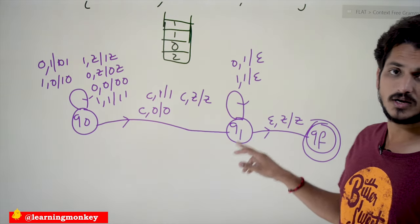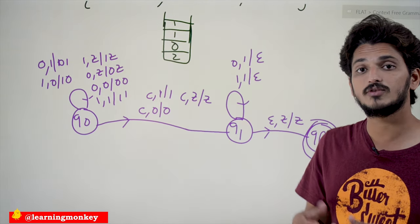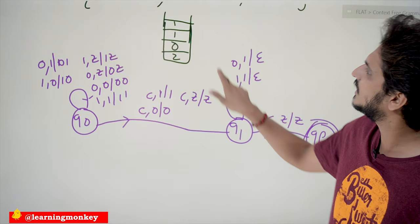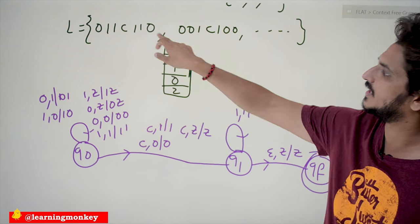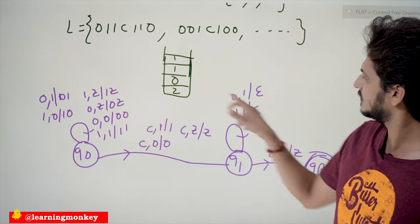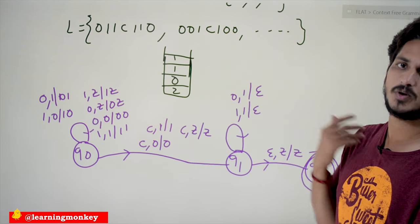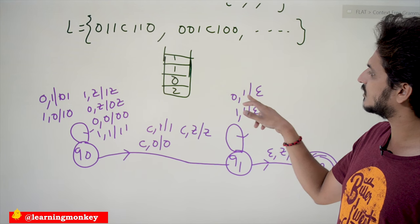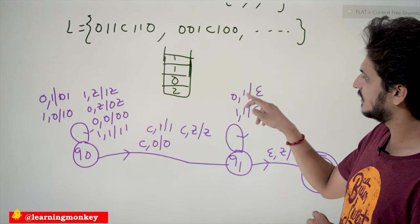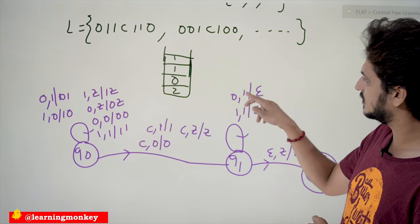In q1, we check for the reverse of the string. If the input symbol is '1' and the stack top is '1', pop — epsilon means pop. If the input symbol is '0' and the stack top is '0', pop. That is how we write the pushdown automata for a given language. If you have any questions, please post them in the comment section below. In the next class we are going to discuss about non-deterministic pushdown automata examples.